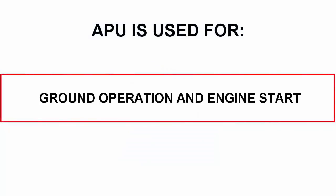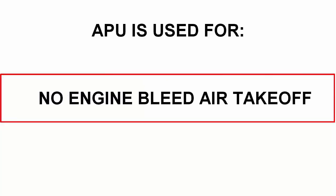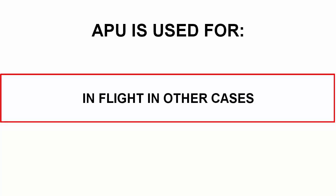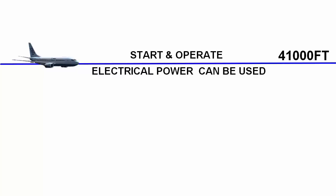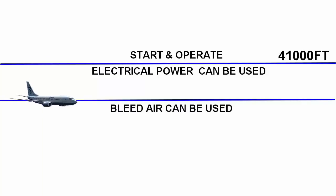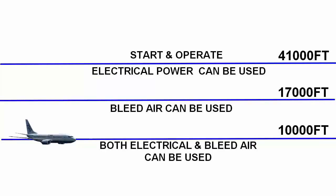We use the APU on the ground for engine start, or for no-engine bleed air takeoff when the engine is unable to produce its full rated thrust. In some conditions we can also use the APU in flight. The APU can start and operate up to 41,000 feet. Electrical power can be used up to 41,000 feet. Bleed air can be used up to 17,000 feet. Both electrical and bleed power can be used up to 10,000 feet.